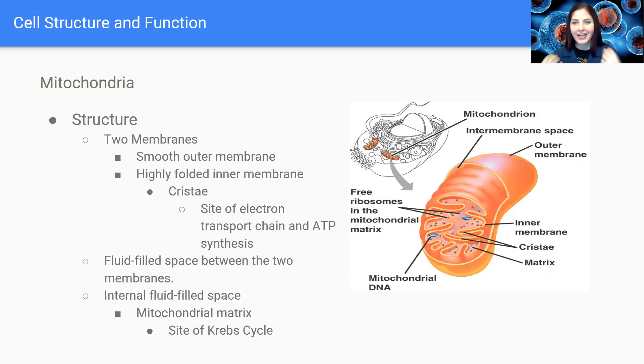That's how we provide energy to fuel all of life's processes. So this fluid filled space right here that's between the two membranes is called the mitochondrial matrix and this is the site of the Krebs cycle.